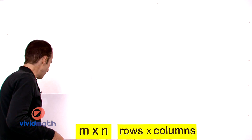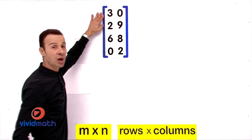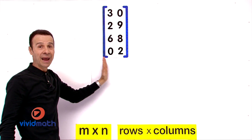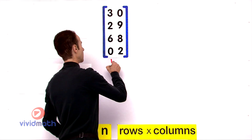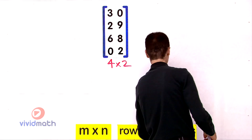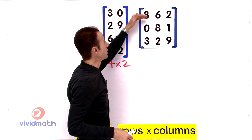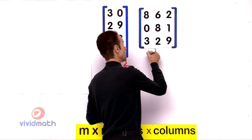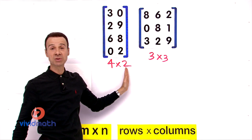Let's look at some examples. Say we have a matrix — how many rows and columns does it have? It has four rows and two columns, so that is a four by two. And if I grab another matrix, this one has three rows by three columns, so that is a three by three. Can we add or subtract these two matrices?